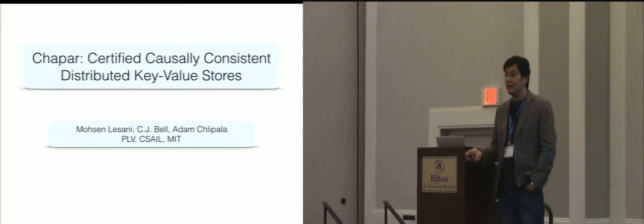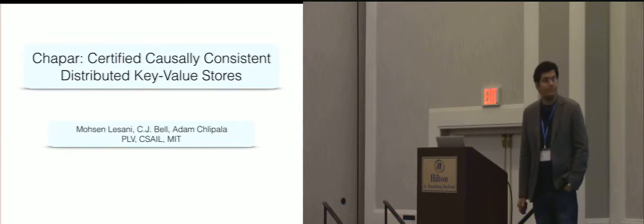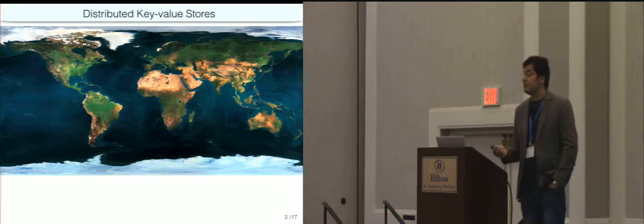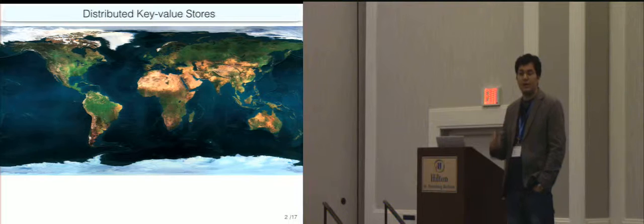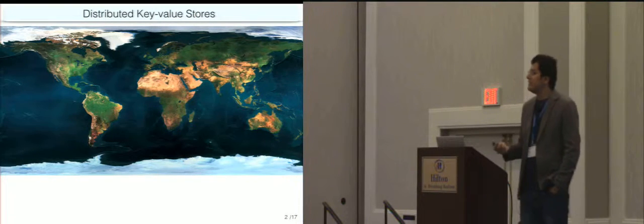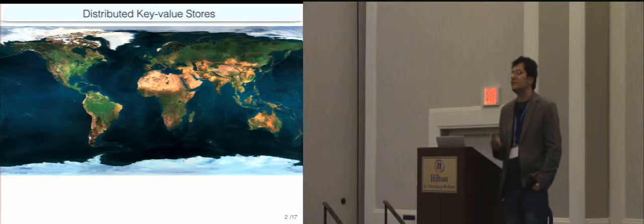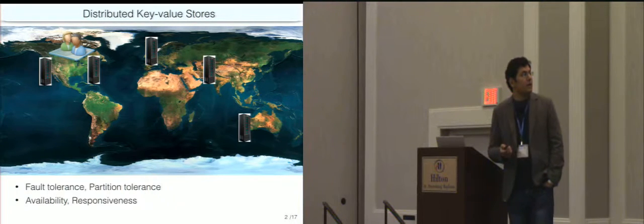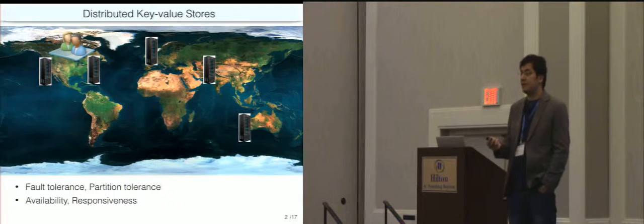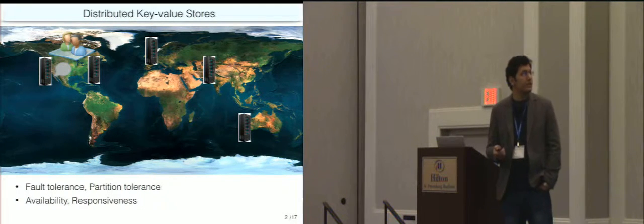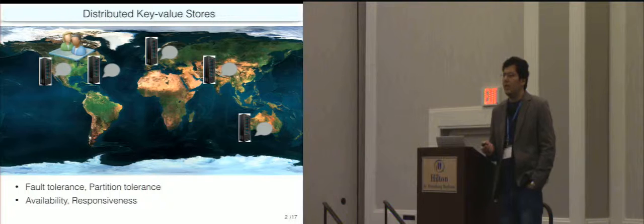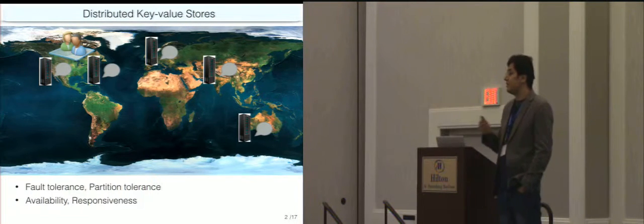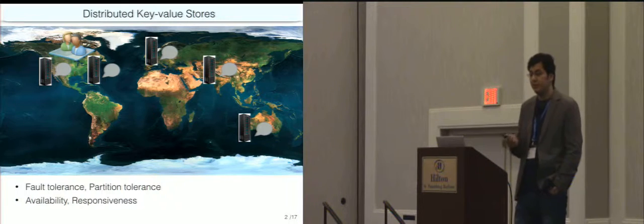I collaborated with CJ Bell and Adam Chlipala as advisor. We are the end users of distributed key-value stores every day. That's the place where our email and Facebook data is stored, and we want these services to be available even if the server crashes. So there is no one server but georeplicated servers, and if the user sends an update to one of these servers, an update is sent to the other replicas and they are updated as well. And if one of these servers crashes, other servers can continue to give you the service.